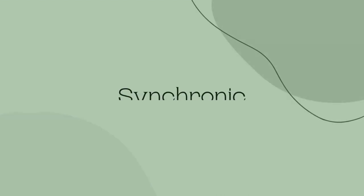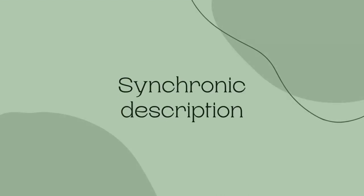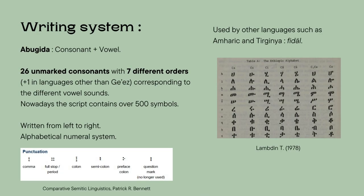I'll start describing the language synchronically by mentioning its writing system. The Ge'ez script is an abugida, a writing system in which consonants are written with letters and vowels are indicated with diacritics or modifications to the consonant symbol. At first the script was an abjad, where consonants were only represented. Vowel indications started to appear in the 4th century AD during the reign of King Ildsana, though it might have developed at an earlier date. The original Ethiopic script contained 182 characters but has now extended for other languages and contains over 500 symbols.